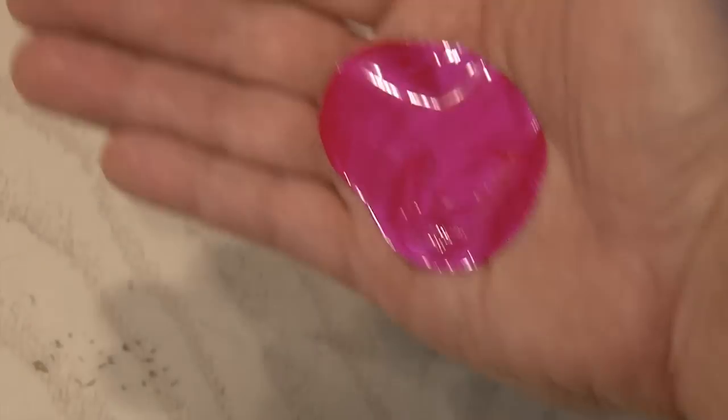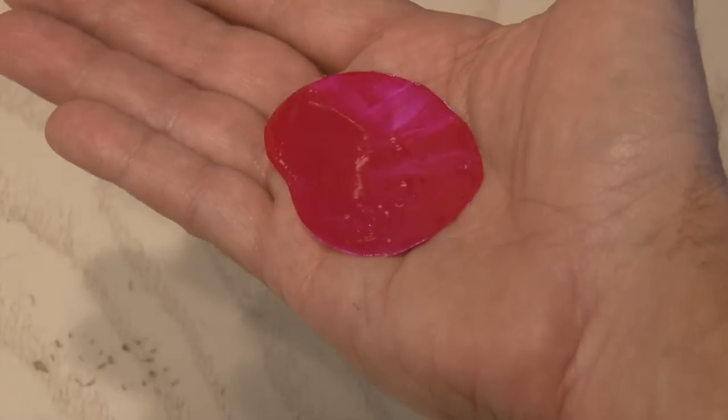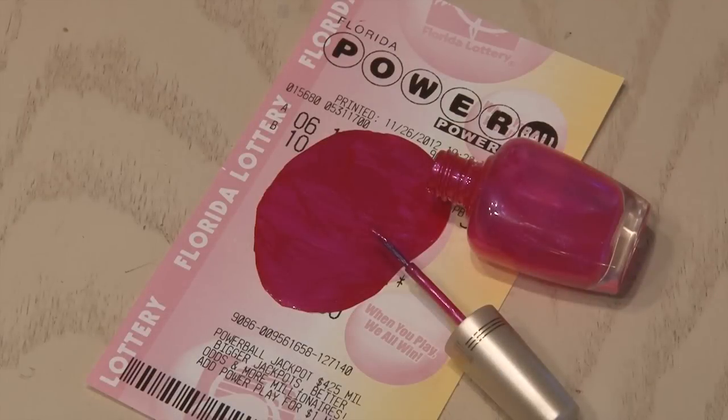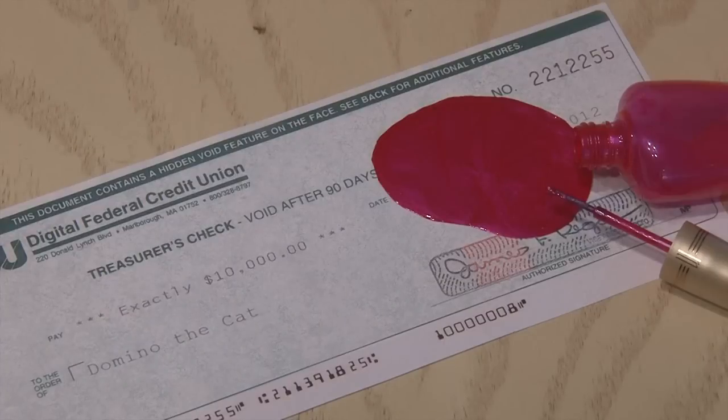After a while the nail polish will harden and you can peel it off the wax paper. Then use it for your gag. Find an important document like a winning powerball ticket worth $500 million or a $10,000 check made out to Domino the Cat. When your friend sees this spill, they're going to flip out.